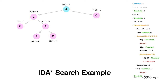We observe that we go deeper only if F(n) values are less than or equal to the threshold. Once F(n) crosses the threshold, we stop. So instead of using a depth limit as in iterative deepening DFS, we use F(n) as the threshold to decide how deep to go.